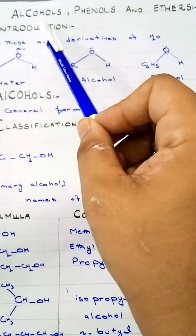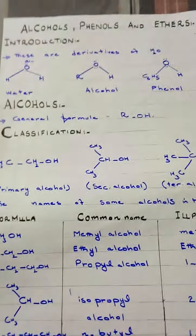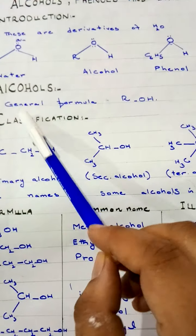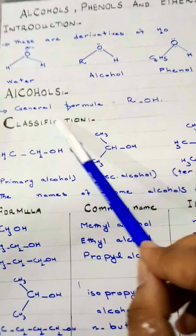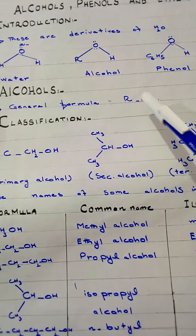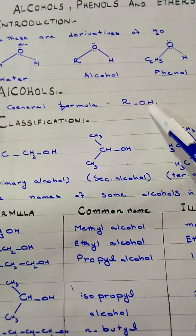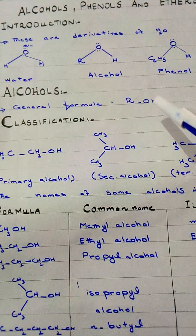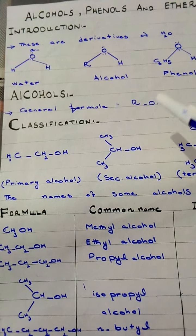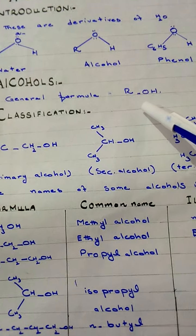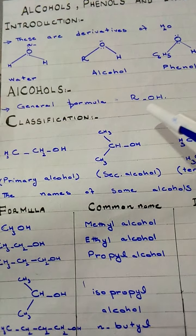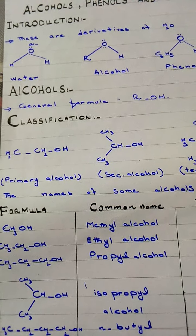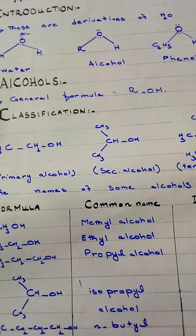First we will discuss alcohols, then phenols, and then ethers. The general formula of alcohol is ROH. The functional group OH is the alcoholic group — when it is attached in a compound, that compound is called an alcohol.